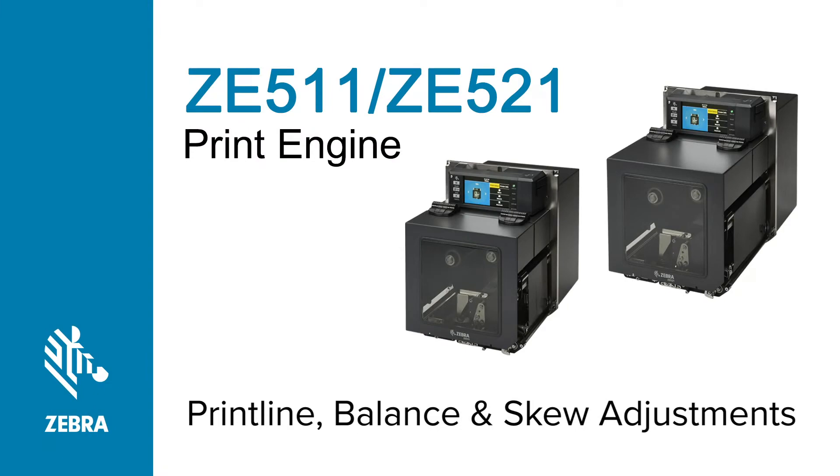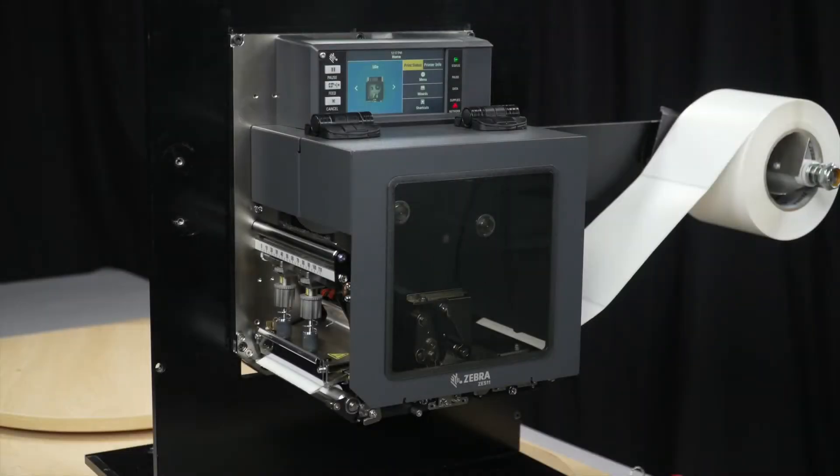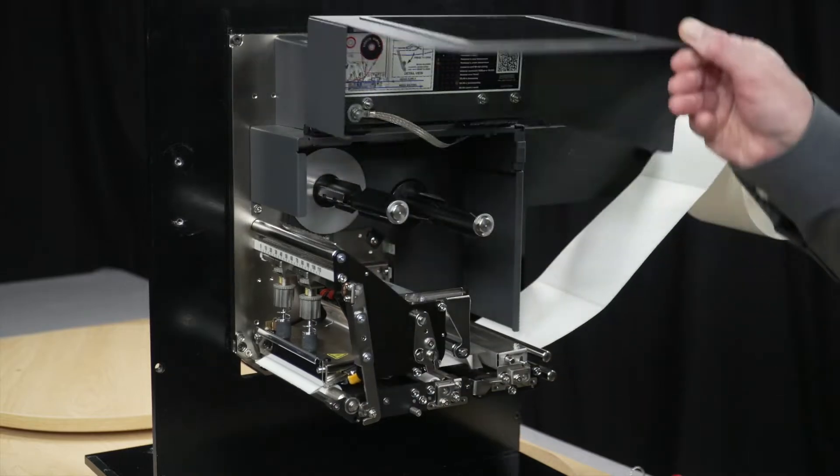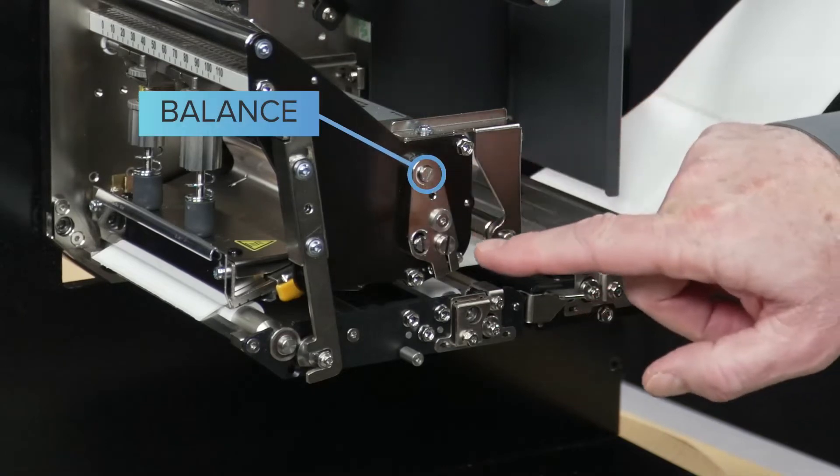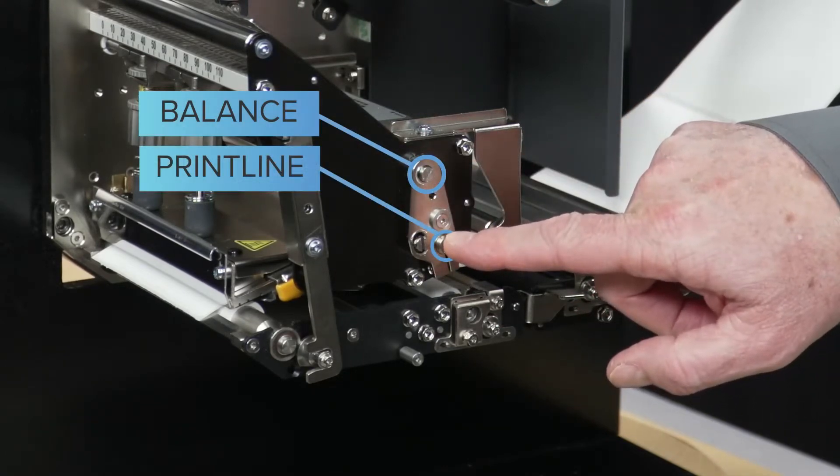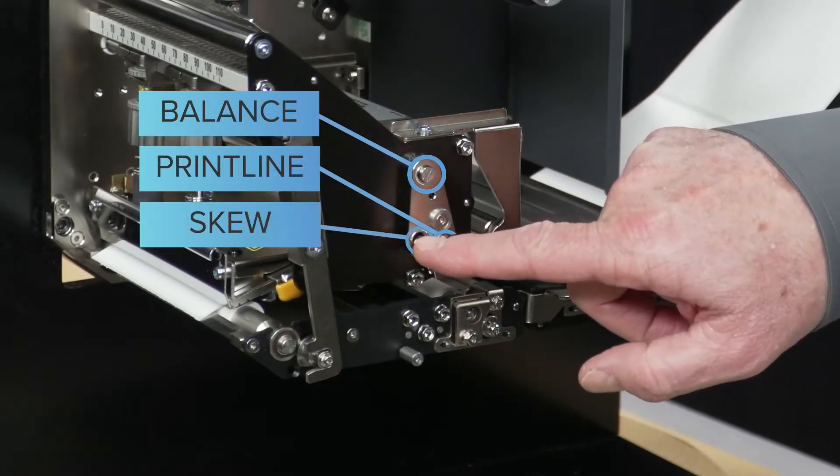In this video, we're going to go through the print line calibration for the new ZE511 and 521 print engines. To do that, we're going to utilize this outboard cam system for balance, print line adjustment or fore aft adjustment, and skew adjustment.